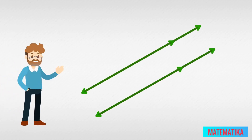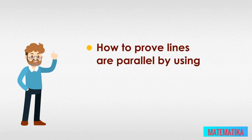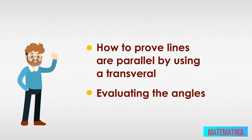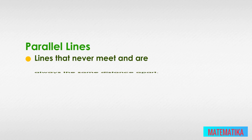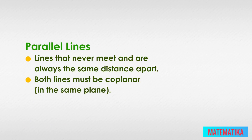How can you prove two lines are actually parallel? In this lesson we are going to show you how to prove lines are parallel by using a transversal and evaluating the angles. Two lines are parallel if they never meet and are always the same distance apart. Both lines must be coplanar, which means in the same plane. To use geometric shorthand, we write the symbol for parallel lines as two tiny parallel lines.